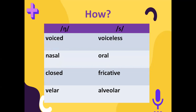Secondly, S is oral in the sense that the soft palate is raised, whereas N is nasal, meaning we pronounce it with the soft palate lowered. Third, S is fricative with a partial closure in the mouth, while N requires complete closure. The fourth quality is that N is a velar sound whereas S is alveolar. So the transition from N involves four changes: at the vocal folds, with the soft palate, with a different degree of closure, and with a different part of the tongue.